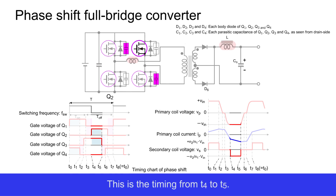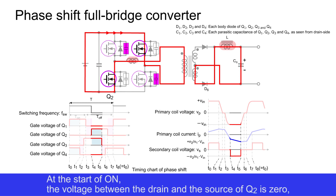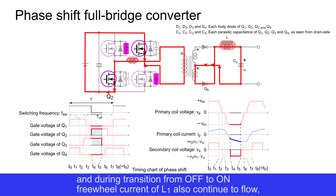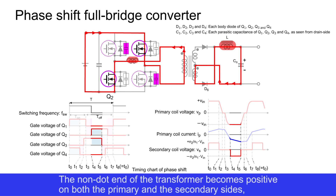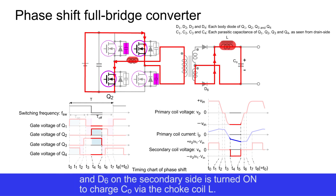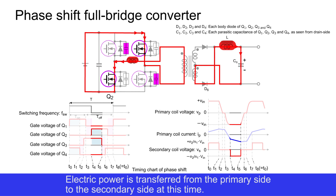This is the timing from T4 to T5. Q2 is turned on. At the start of on, the voltage between the drain and source of Q2 is zero, and during the transition from off to on, freewheel current of L1 also continues to flow, so switching is completed with soft switching. The non-dot end of the transformer becomes positive on both the primary and secondary sides, and D6 on the secondary side is turned on to charge CO via the choke coil L. Electric power is transferred from the primary side to the secondary side at this time.